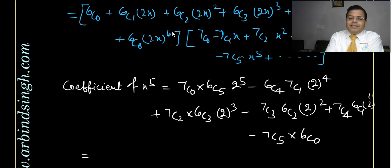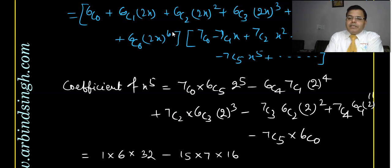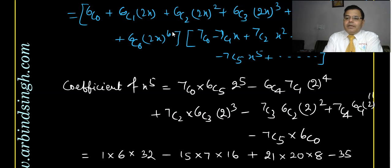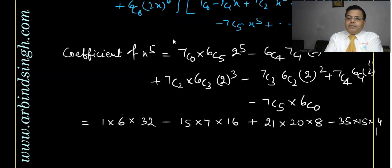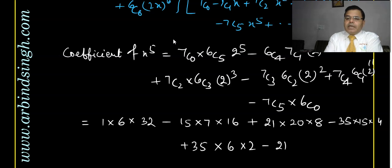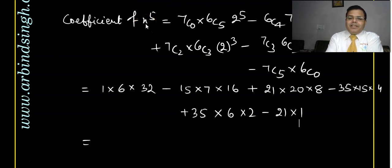The coefficient of x^5 is obtained by multiplying terms whose powers add to 5: 7C0·6C5·2^5, minus 6C4·7C1·2^4, plus 7C2·6C3·2^3, minus 7C3·6C2·2^2, plus 7C4·6C1·2^1, minus 7C5·6C0. Substituting values: 1×6×32 = 192, minus 15×7×16 = 1680, plus 21×20×8 = 3360, minus 35×15×4 = 2100, plus 35×6×2 = 420, minus 21×1 = 21.